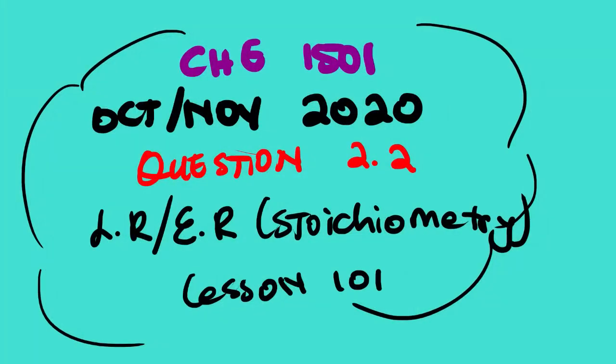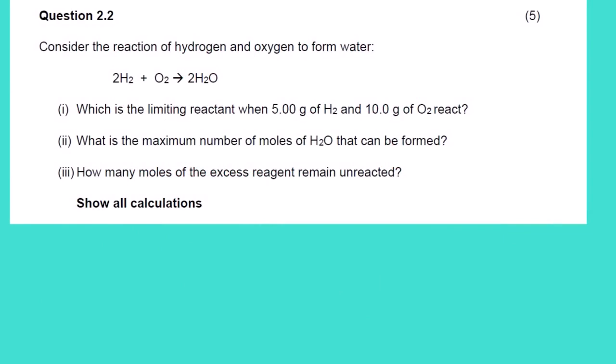Our lesson for today will be looking at Chemistry 1501. The topic for today will be looking at the limiting reagent, excess reagent, the number of moles unreacted or reacted — basically we'll be looking at stoichiometric calculations. This is question 2.2 of October/November 2020. Let us start; this is the actual question paper. We have a lot of work here so I'll try to be as fast as I can to avoid this lesson video being too long.